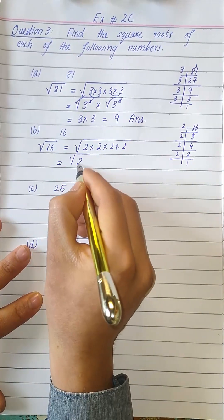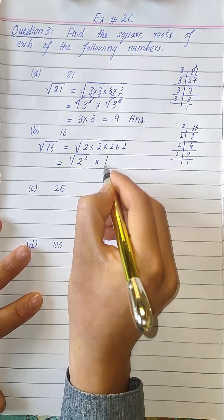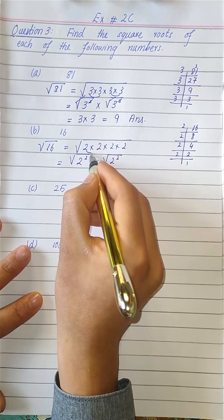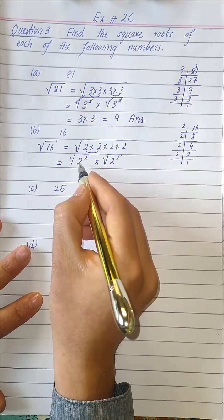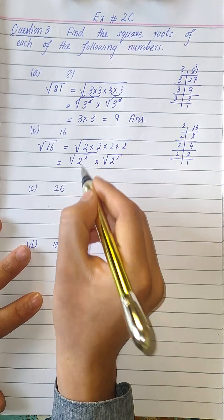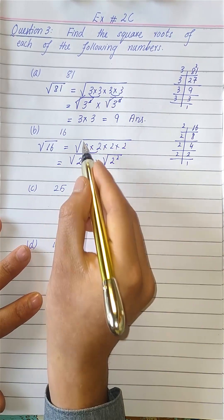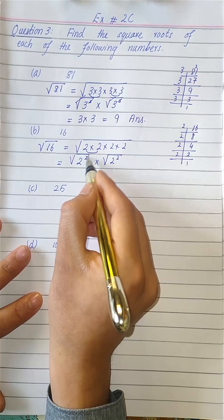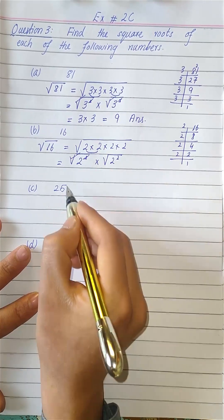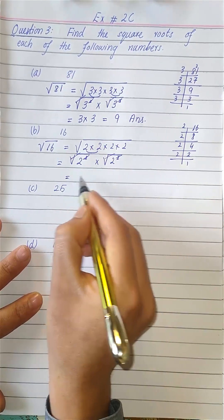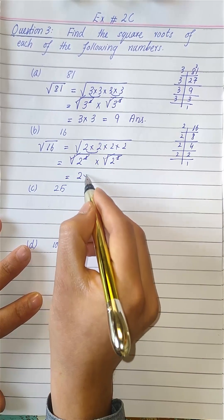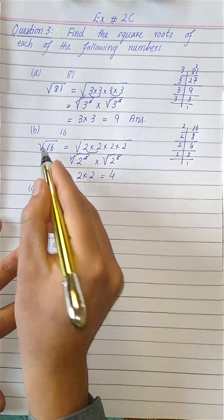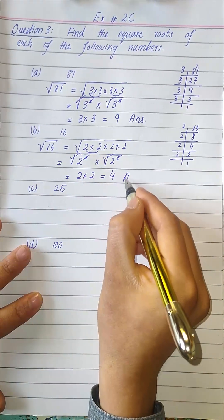This can be written as the square root of 2 to the power 2, times the square root of 2 to the power 2. We write each pair as 2 raised to the power 2 with a square root on each, then cancel out the square roots with the squares, leaving 2 times 2. So the square root of 16 equals 4.